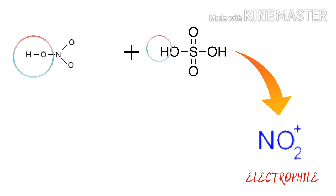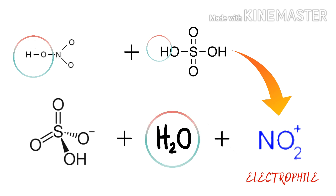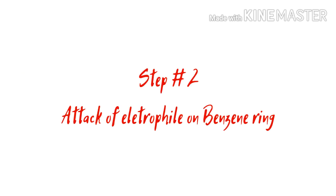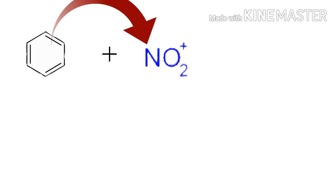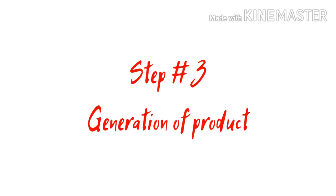Attack of the electrophile on the benzene ring: NO2 positive, the strong electrophile, breaks the aromaticity of the benzene, forming an intermediate product. Step number three is generation of the product.